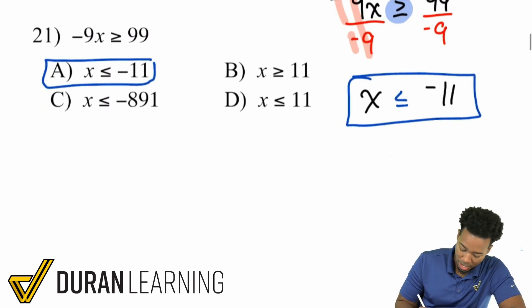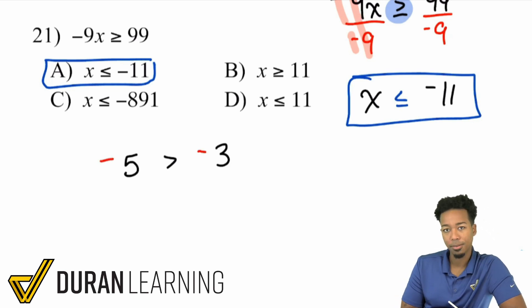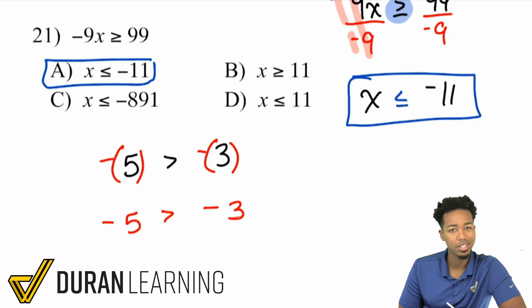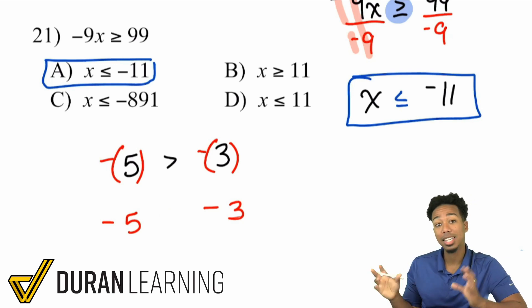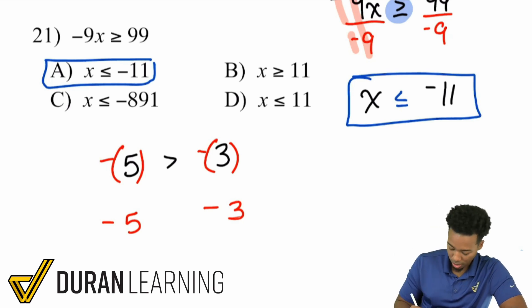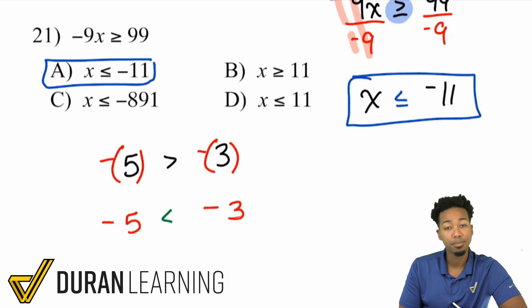So look, if I go ahead and take, let's say, the same example from earlier. If I have 5 is greater than 3, which is a true statement. Look at what happens when I basically turn both sides negative. If I multiply both sides by a negative, well, that's going to become negative 5 and that's negative 3. But the thing is, if I keep the same symbol, negative 5 is not greater than negative 3. It's not. It's actually less than. And so when you negate both sides, you negate the inequality symbol. So again, when you negate both sides, you negate the inequality. You reverse the inequality and that's why it needs to be less than because negative 5 is less than negative 3.